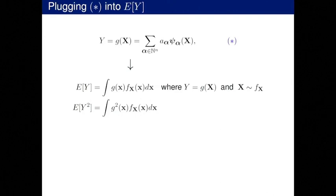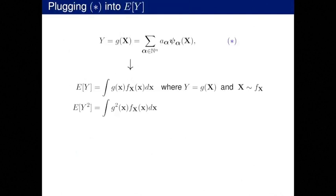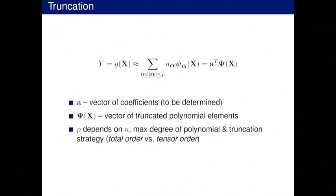Assuming I have those weights, I can plug them into my quantity of interest. For G, I plug in this series. In the 1D case, all I'll get are the constant terms because the rest integrate against one to give zero by orthogonality. So the integrals we're interested in are essentially free — delta functions are great that way. But nothing's free: we need to truncate this series of polynomials and find these coefficients. This is the work in polynomial chaos — these two ideas: truncation and coefficient estimation.